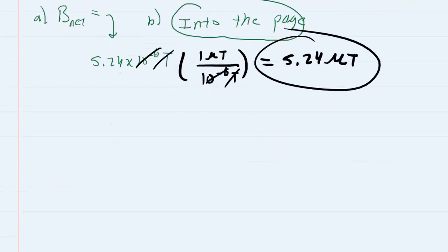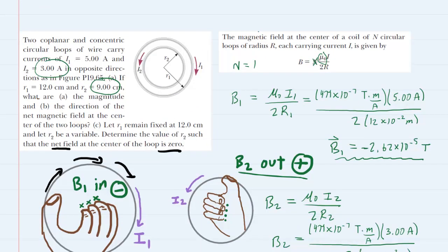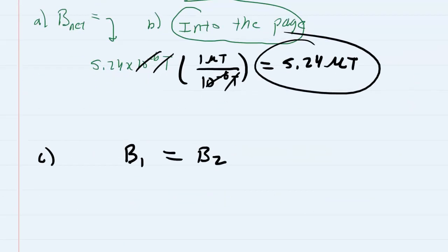What does this mean when the net field is zero? Well it will certainly mean that the magnitude of magnetic field one equals the magnitude of magnetic field two and that way they would cancel each other out. Remember the equation for the magnetic field is mu I over 2 R. So for B1 we could say mu times I1 over 2 times R1 equals mu times I2 divided by 2 times R2.